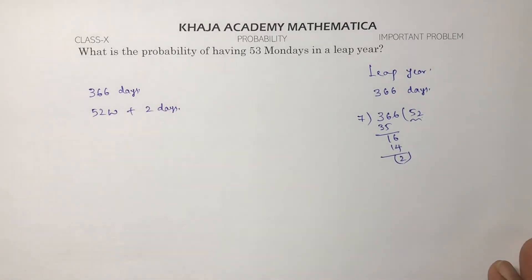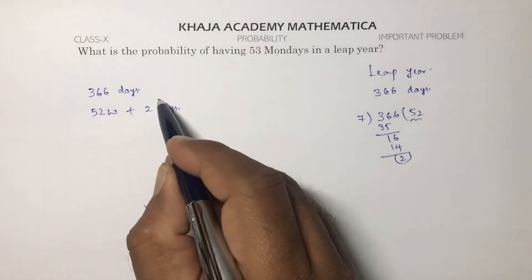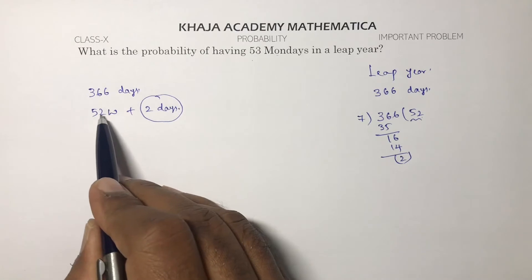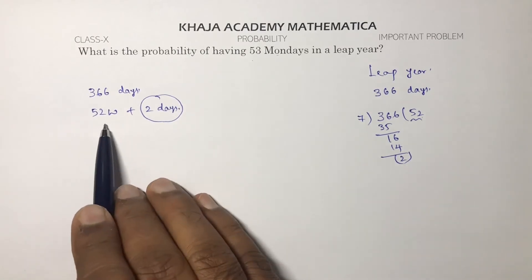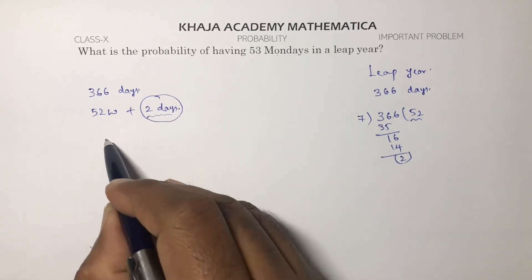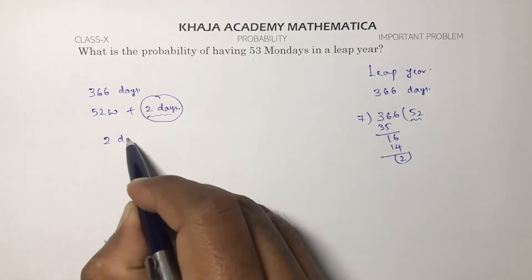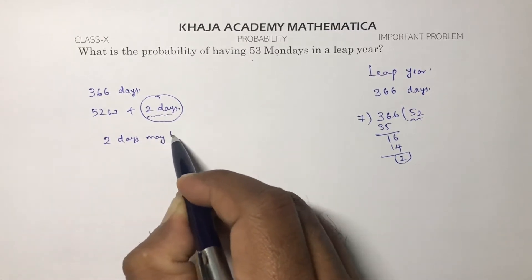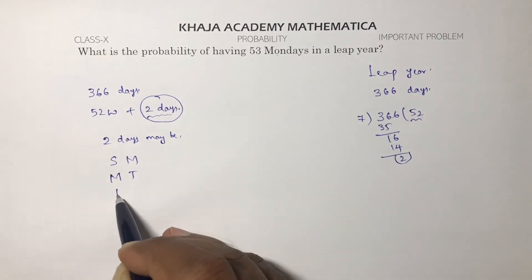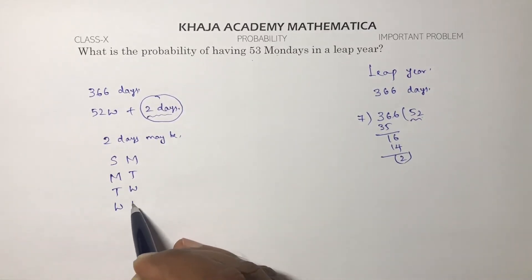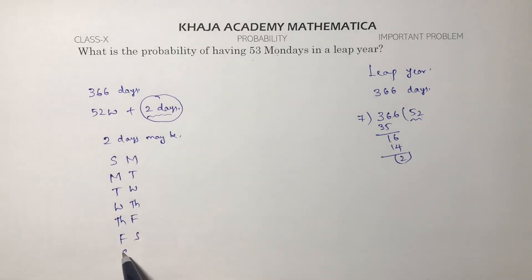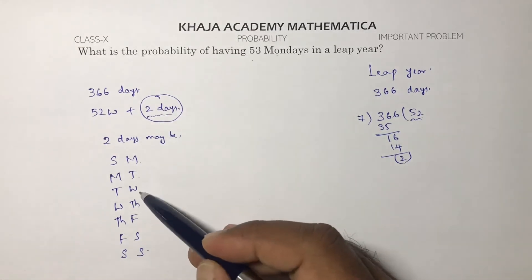With 52 weeks, every day occurs 52 times, and 53 Mondays will be decided by these two extra days. These two consecutive days may be: Sunday-Monday, Monday-Tuesday, Tuesday-Wednesday, Wednesday-Thursday, Thursday-Friday, Friday-Saturday, or Saturday-Sunday — giving us seven possible outcomes.